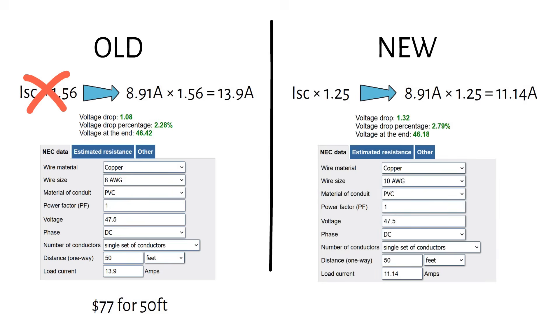With these values, the calculator now tells us we can use a 10 gauge or 6 mm square PV cable instead of 8 gauge. A 10 gauge PV cable will cost you $50 for 50 feet. So by correcting the current in the voltage drop calculation, you will save $27 on the cable.